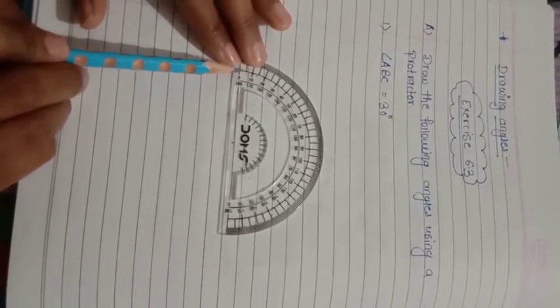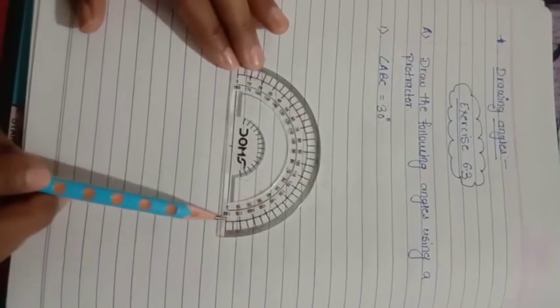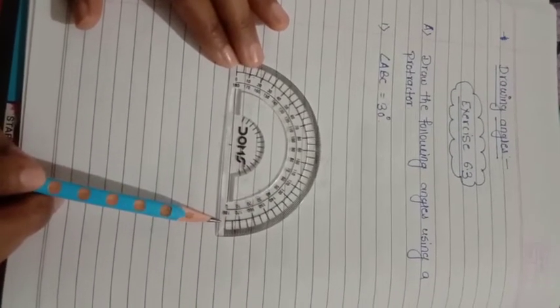Here again you have zero degrees, 10 degrees, 20, 30, 40 and so on till 180 degrees. This is the outer scale of the protractor.